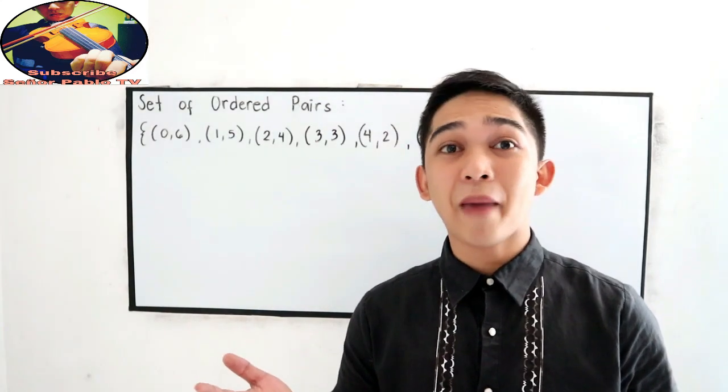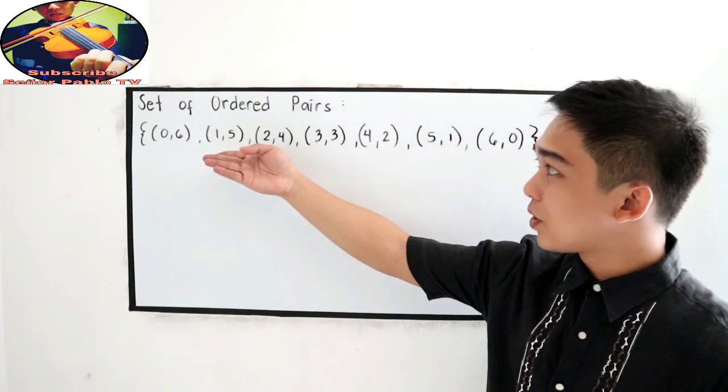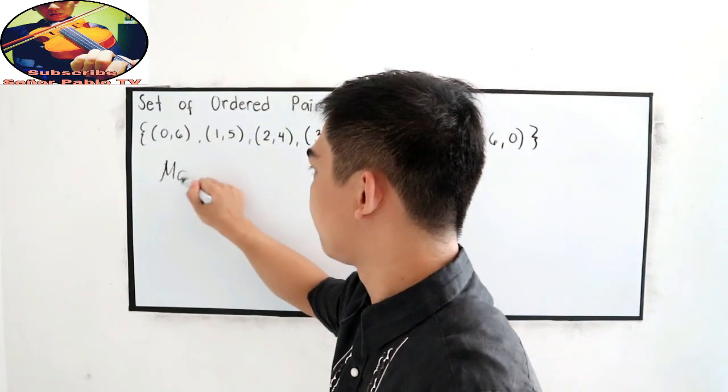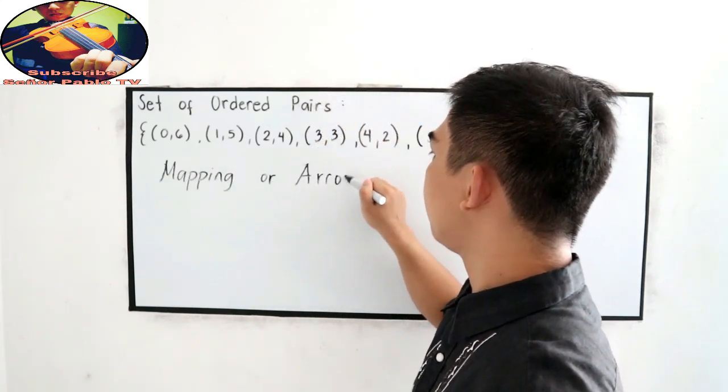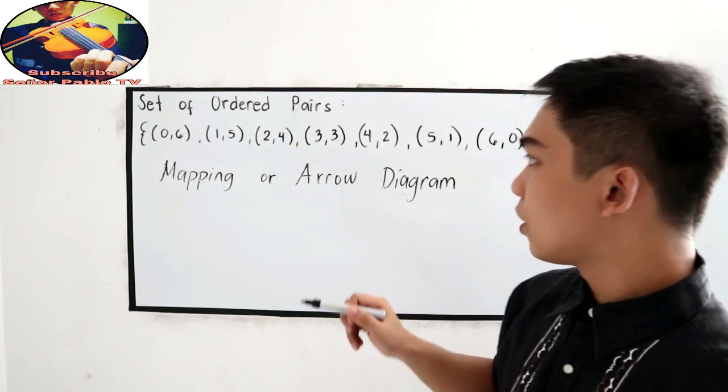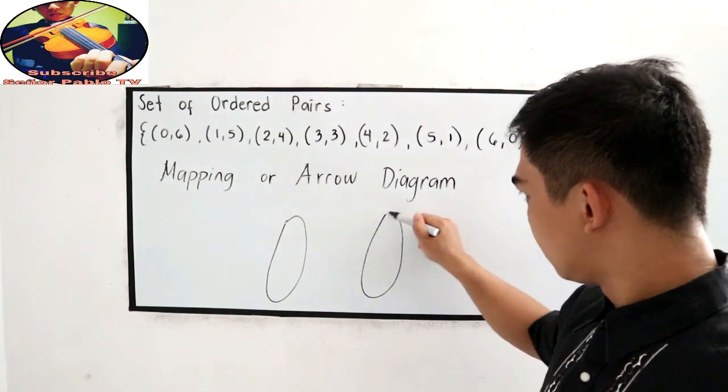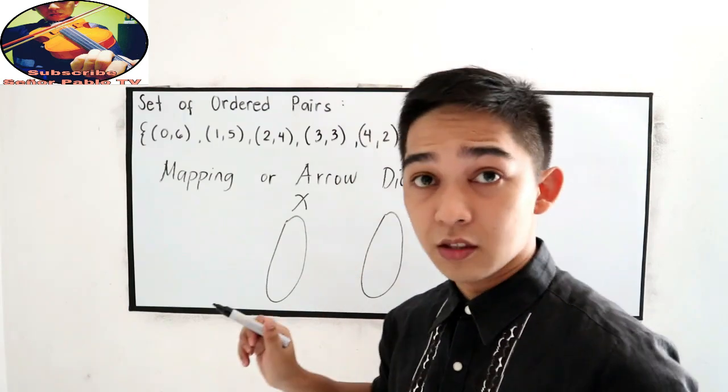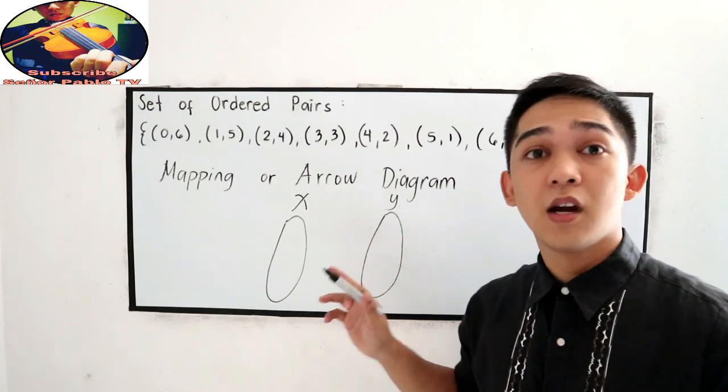The other way is the mapping or arrow diagram. So, using our ordered pairs, let us write it using the mapping or arrow diagram. In this case, we have a diagram, which is on the left side.